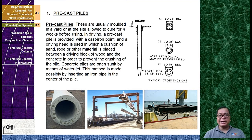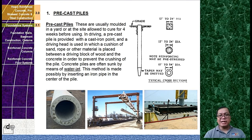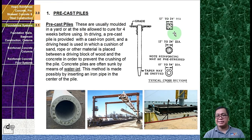Precast piles are usually molded in a yard and allowed to cure for 4 weeks before use. In driving, a precast pile is provided with a cast iron point and a driving head, with a cushion of sand, rope, or other material placed between the driving block and the concrete to prevent crushing. Concrete piles are often sunk by means of a water jet, made possible by inserting an iron pipe in the center of the pile. Typical cross-sections are square, sometimes 12 inches to 24 inches, or hollow in the center.